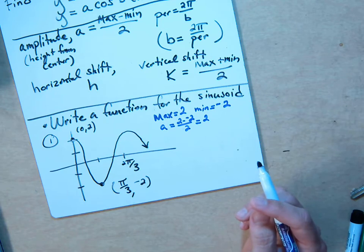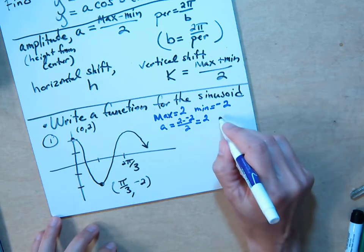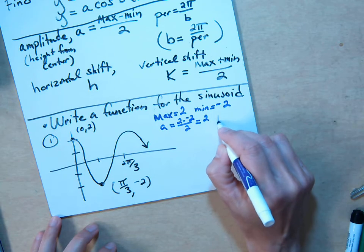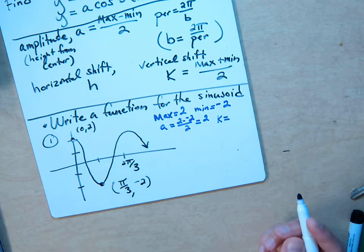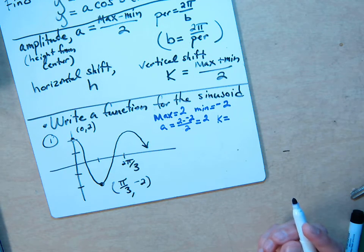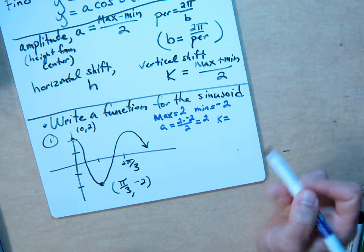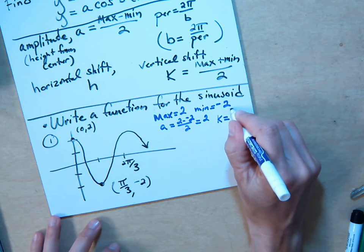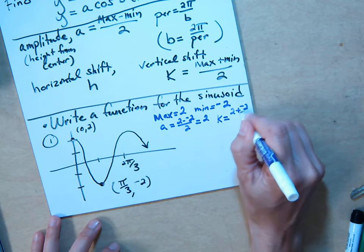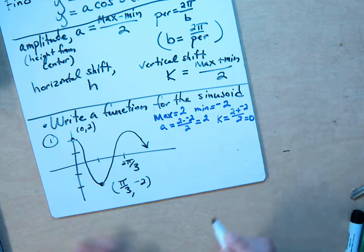We're a fourth of the way there. We have to find the constants a, b, h, and k. So we found a. Now we're going to find k, which is if there's any shifting up or down. Can you tell me what k is without even using a formula? Did I shift it up or down or is it centered right at zero? It's centered right at zero, so k is zero. We didn't move it up or down. But I'm just going to use the formula so you would add max plus min divide by 2, and of course that's zero.